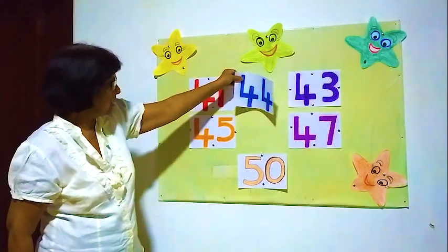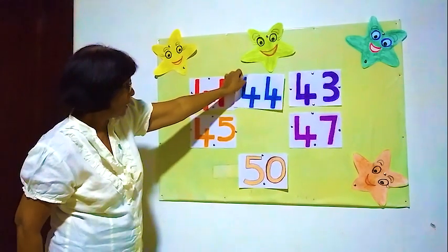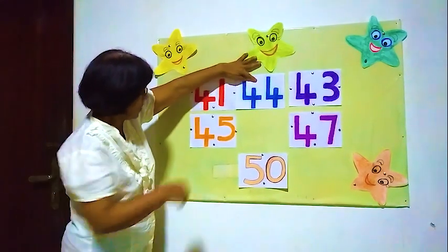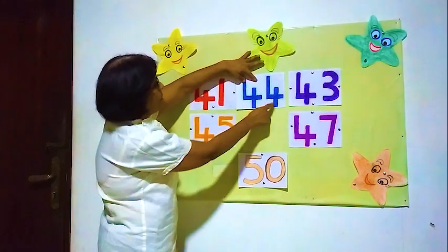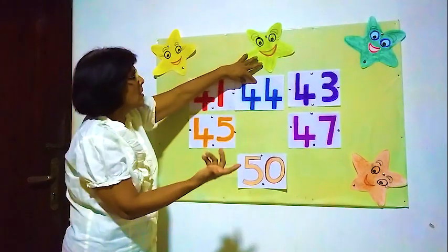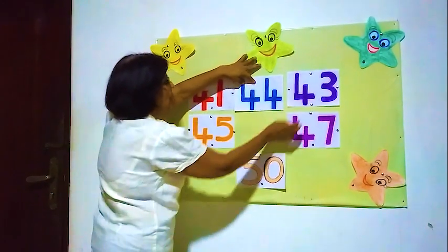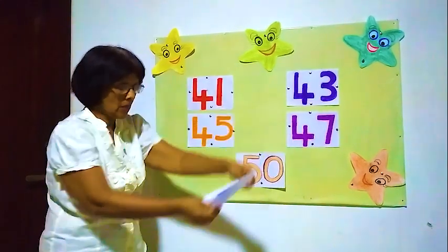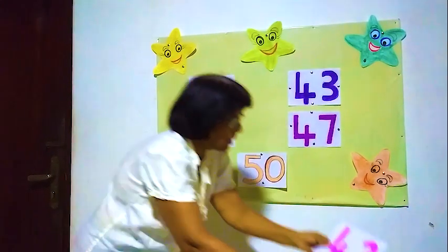Is this 42? No, that's wrong — here it shows 4 and 4, so that's 43. 42 must come here. Yes, 42 goes here.